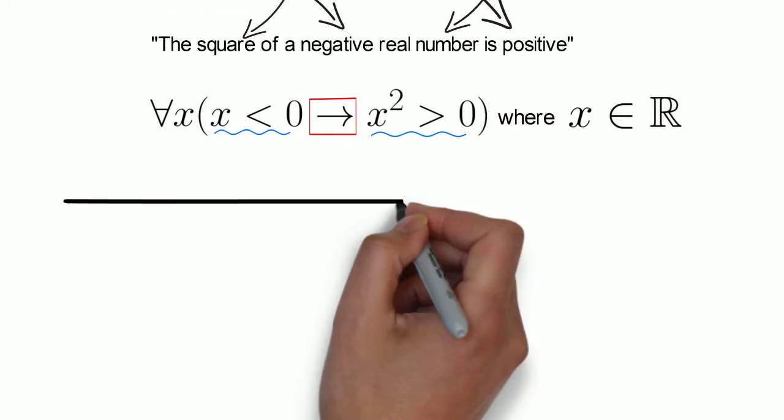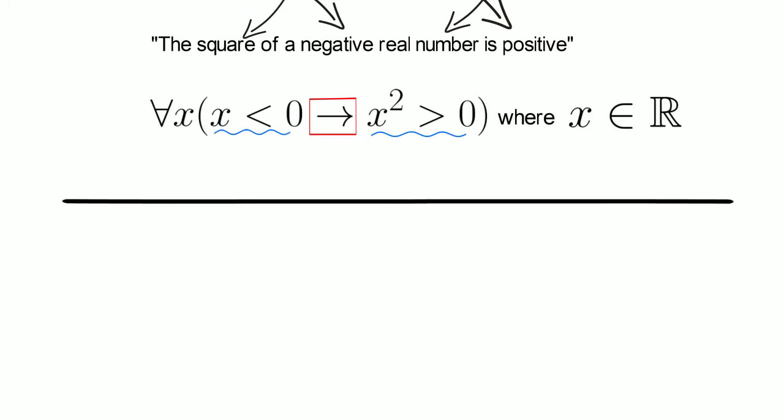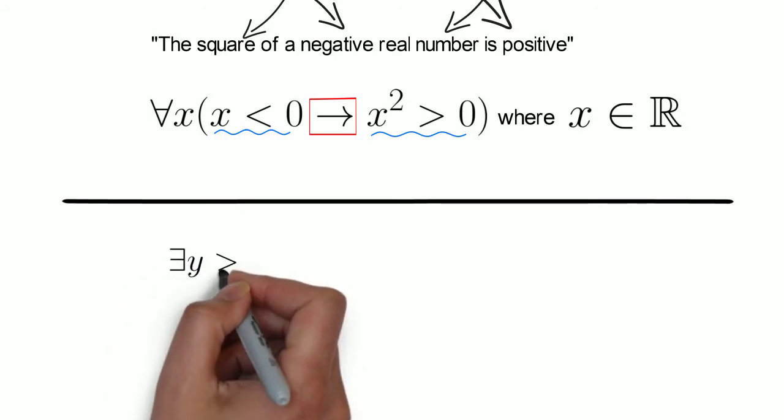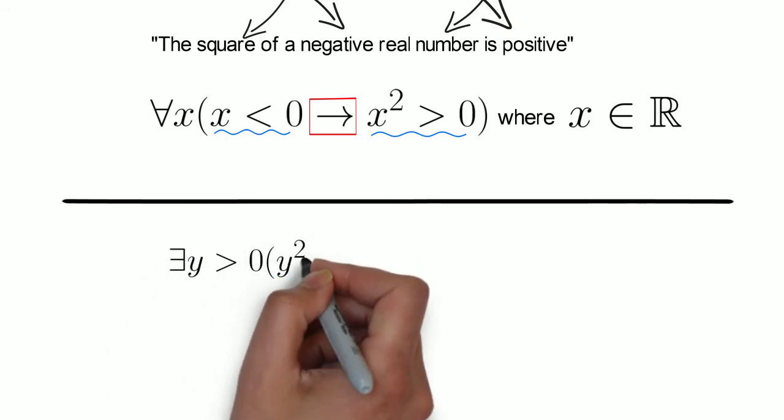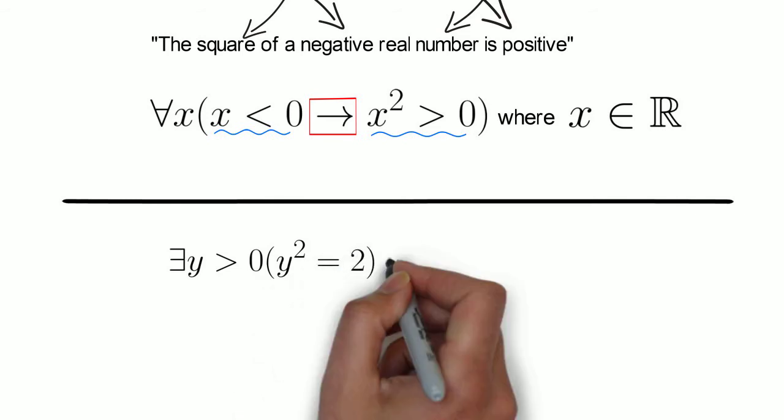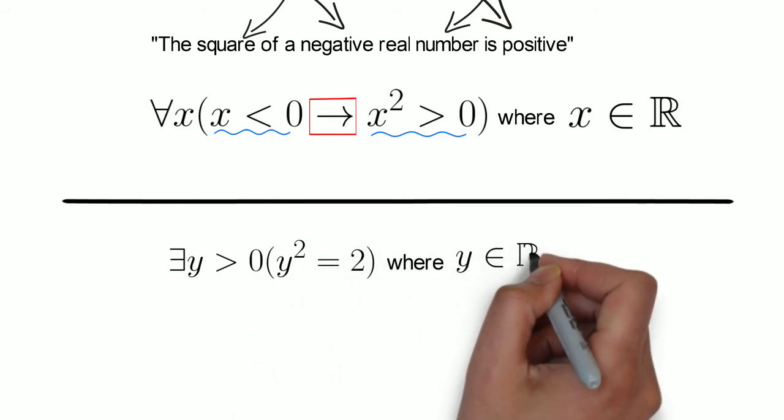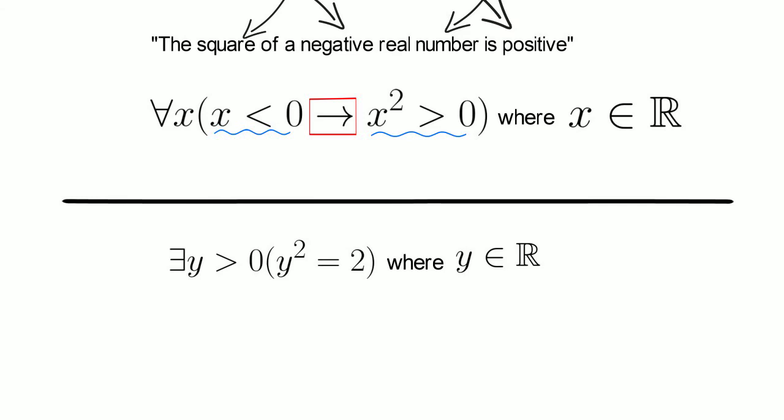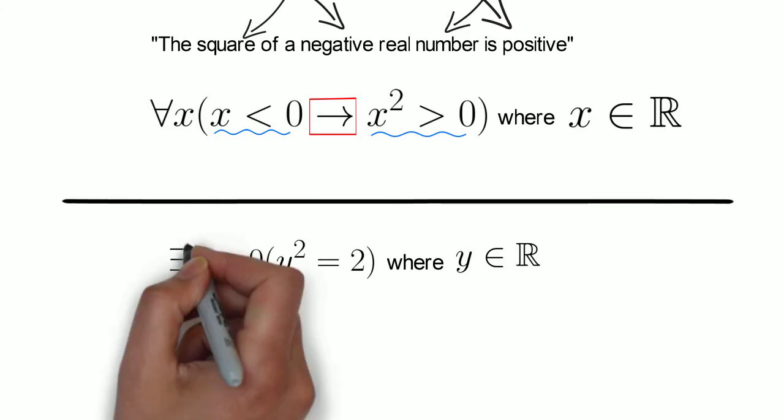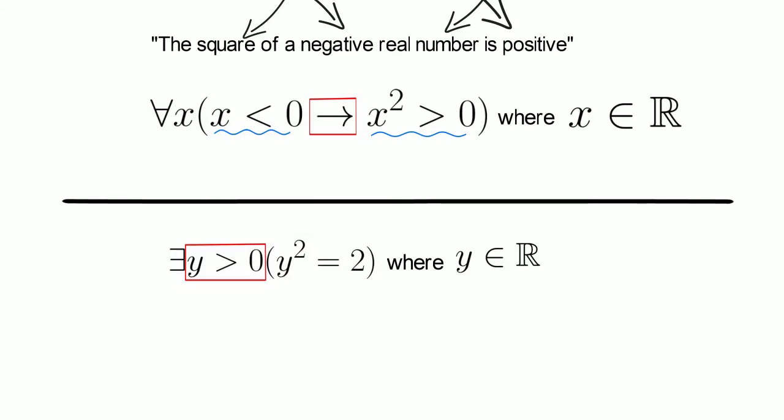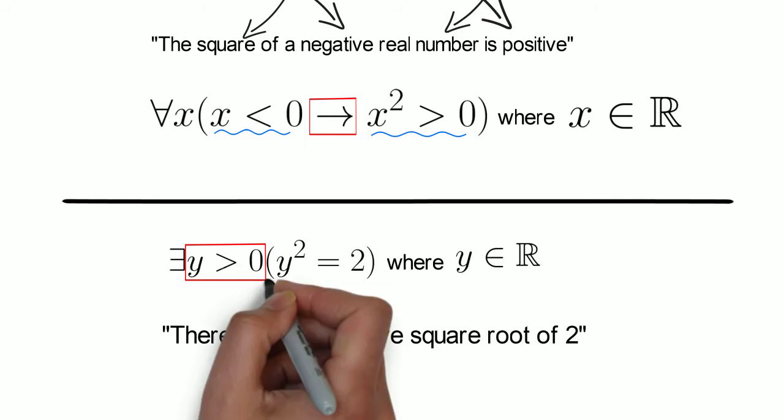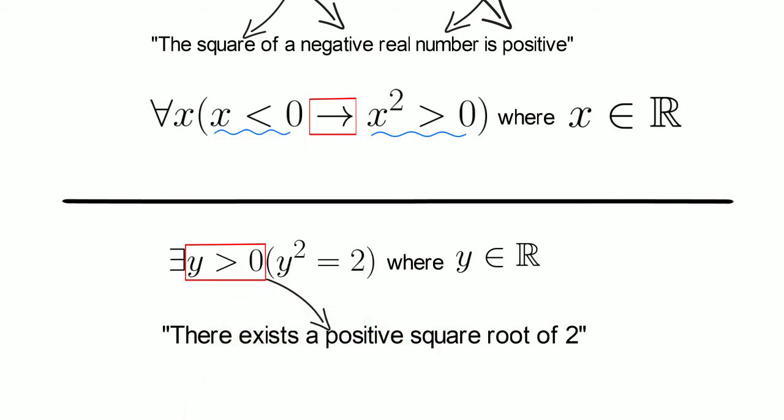Let's take another example of domain restriction with the existential quantifier. ∃y > 0 (y² = 2), where the domain is a set of real numbers. The domain restriction here is y > 0. This statement is translated into the English language as: there exists a positive square root of 2.